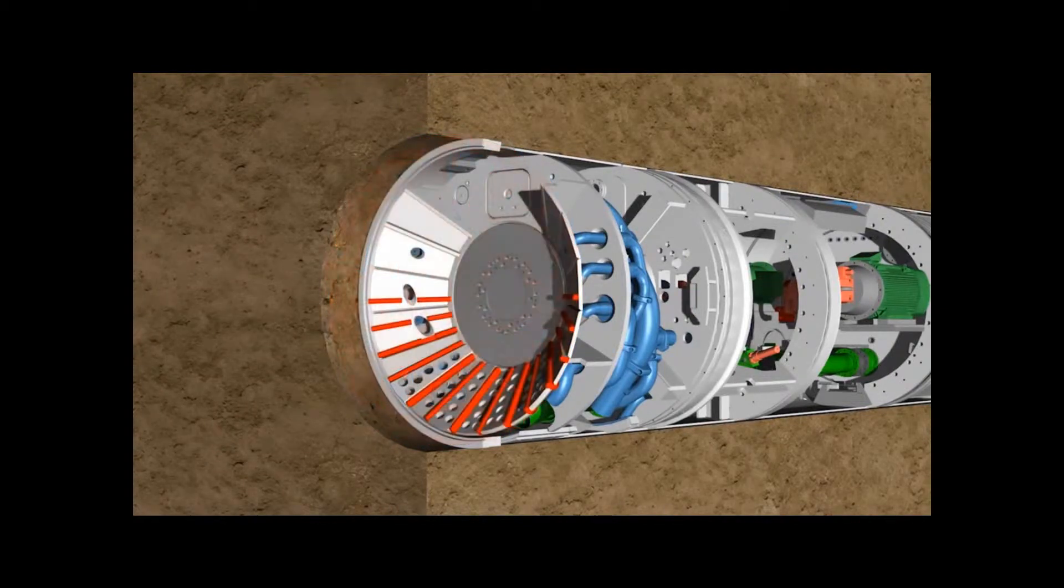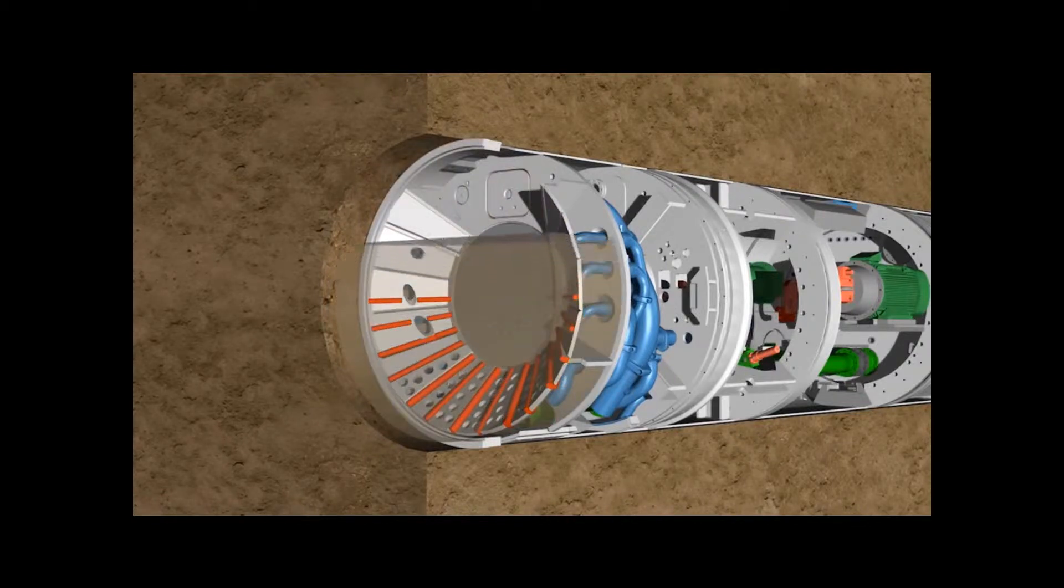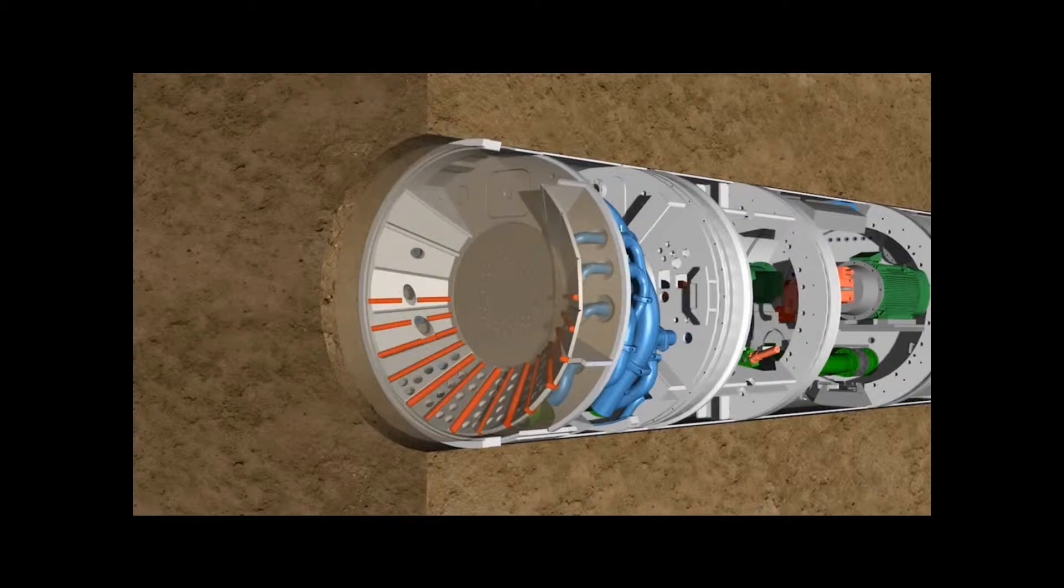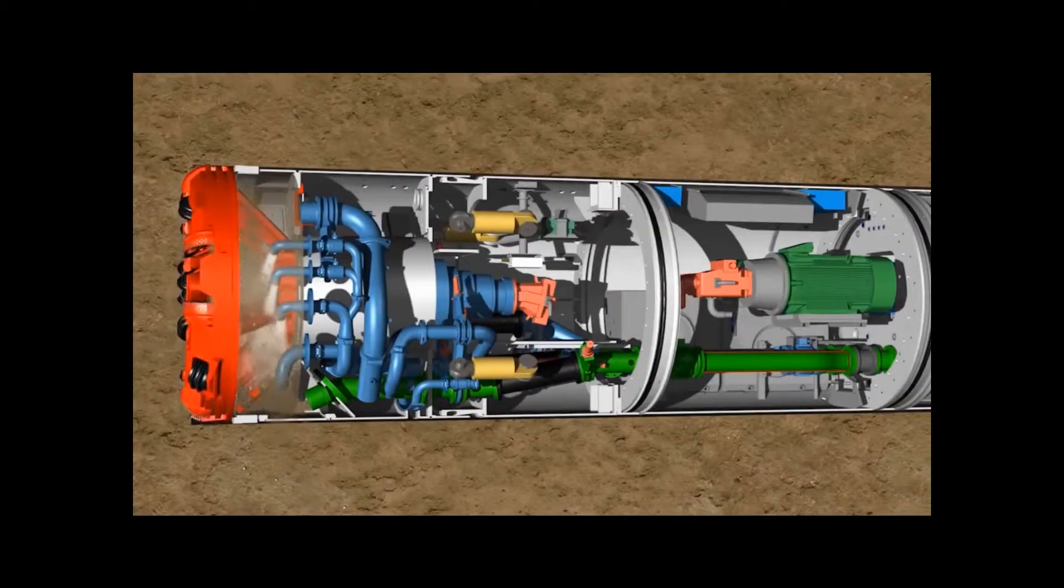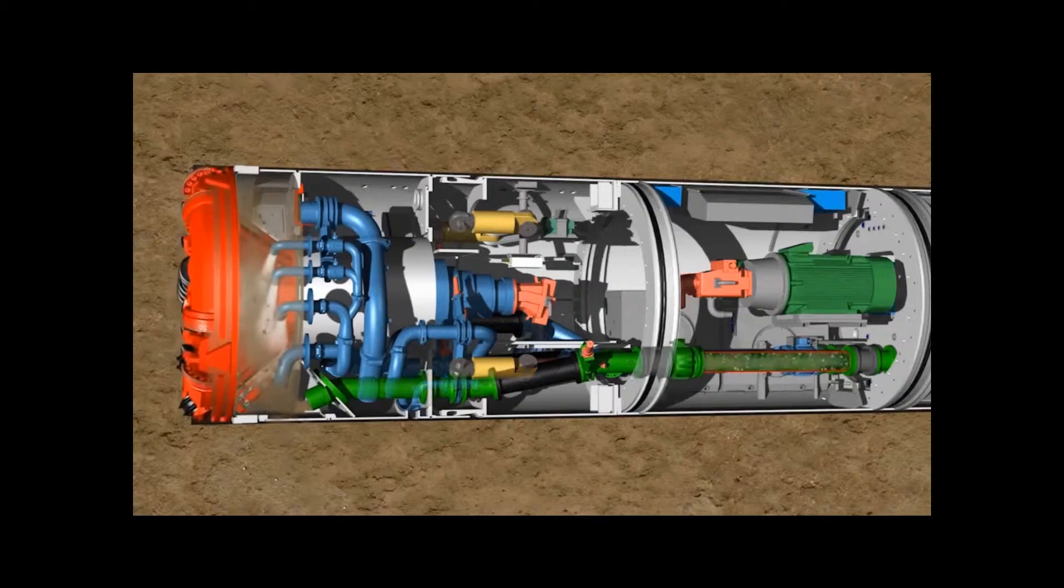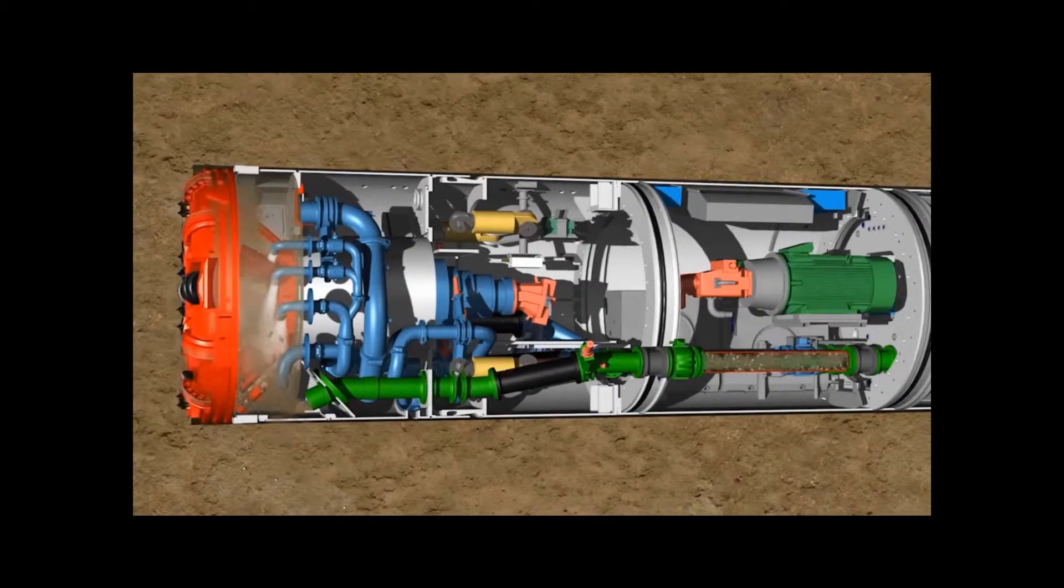Behind the cutting wheel is the crusher chamber. During operation, the whole of the chamber is flooded with support fluid. The cladded spokes of the cutting wheel act as a grinder, working on the principle of a coffee grinder. The larger pieces of soil are crushed so they fit through the openings of the crusher cone and can be carried away.